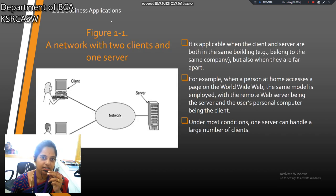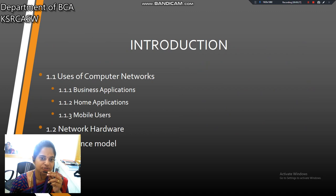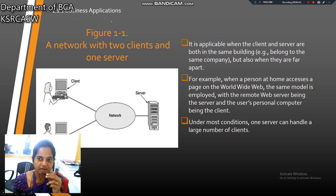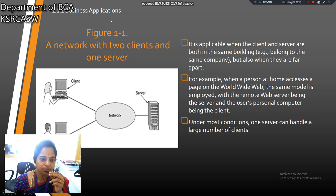First we are going to discuss uses of computers. In that uses of computers, there are three subtitles: business application, home application, and mobile users. First one is business applications. It is applicable when the client and server are both in the same building, for example belonging to the same company, but also when they are far apart. There is one server machine, one client, and two remote clients connecting through the network.